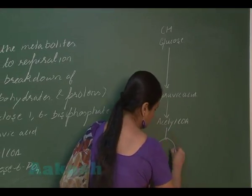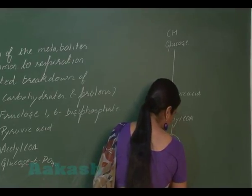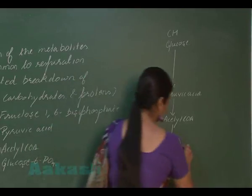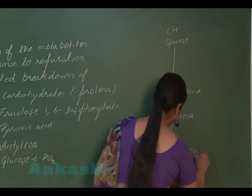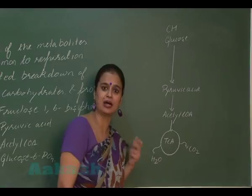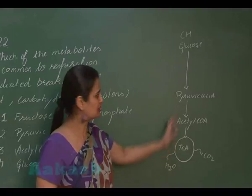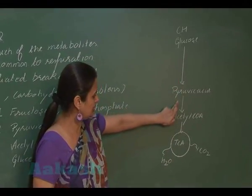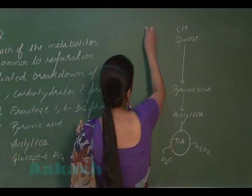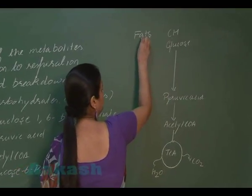Pyruvic acid enters the link reaction and is converted into acetyl coenzyme A. Acetyl coenzyme A then enters the tricarboxylic acid cycle (Krebs cycle), which is followed by the electron transport system (ETS). The end products formed are water, ATP, and carbon dioxide. So the pathway is: glycolysis → link reaction → TCA cycle → ETS.